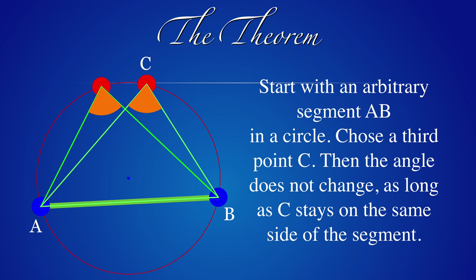Here is the theorem. Pick two points AB on a circle and draw the line segment. Now pick a third point and draw the triangle. This defines an angle at C. If you move the point C, the angle does not change.